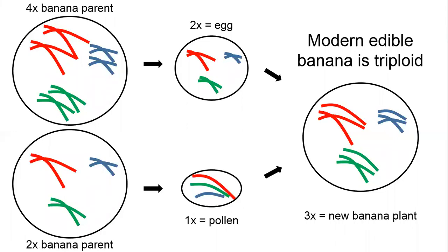And this happened to a wild banana many years ago: its genetic information doubled due to a rare mistake that occurred, and now we had a tetraploid banana. This tetraploid banana gave rise to a 2x egg with double the genetic information compared to the 1x pollen that came from a normal diploid banana. When these two met — when the tetraploid and diploid banana mated — what they ended up producing is a triploid banana, which is 3x: nine chromosomes — three green, three red, three blue.